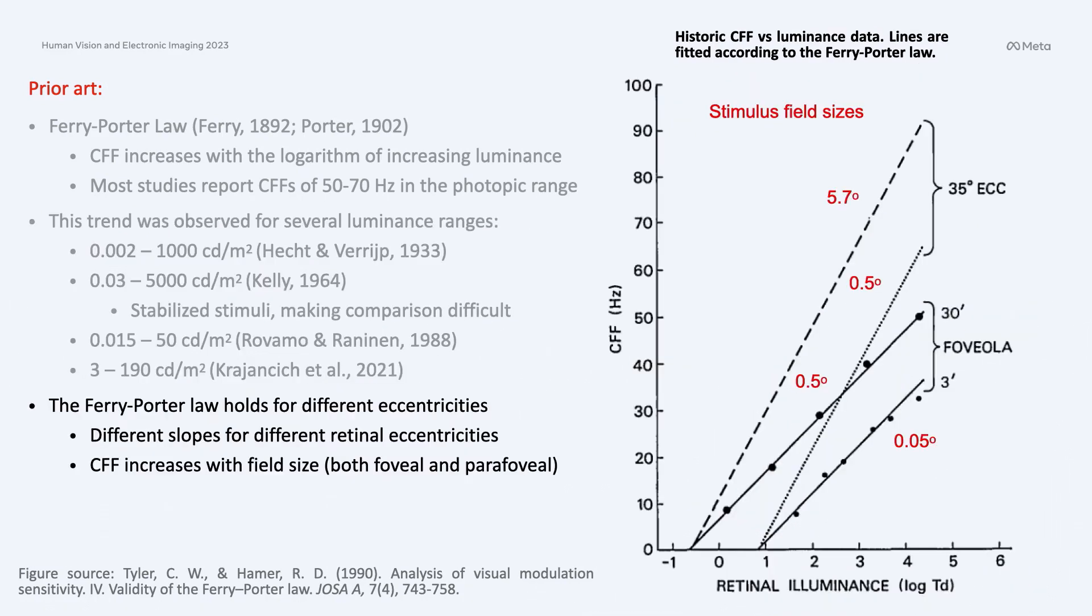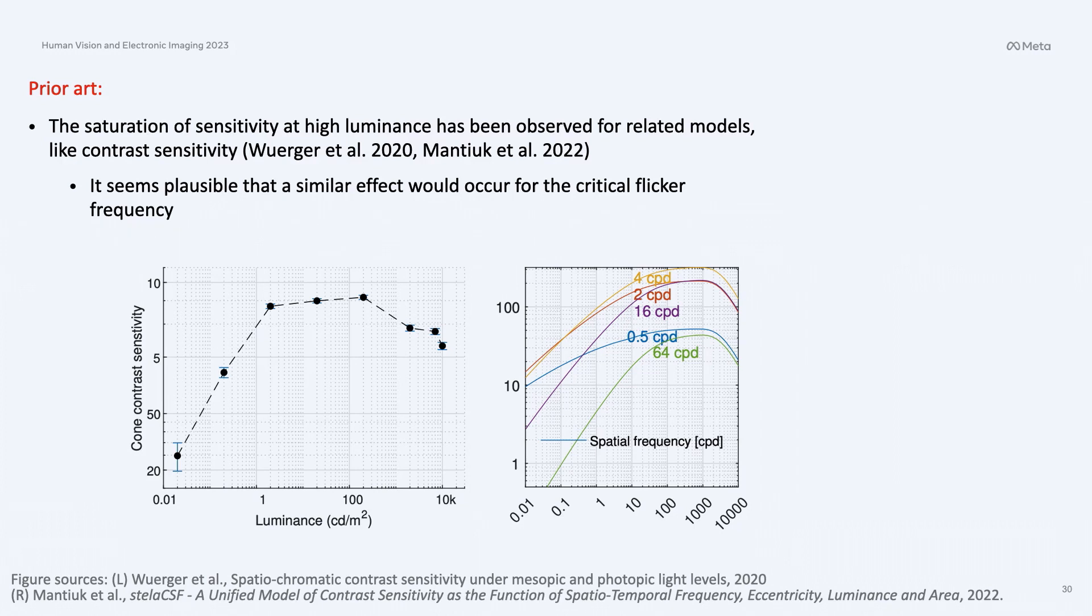The Ferry-Porter law also holds for different eccentricities. If you repeat the study with the stimulus not being foveated, you would still get a line but at a different inclination. We have an idea that saturation at high luminance and maybe even a reversal and reduction in sensitivity could happen. For example, we had an indication from recent work by Verger et al. in 2020, where they measured a contrast sensitivity function for just spatial stimuli with no temporal component. The sensitivity seems to rise and then eventually decline after around 1,000 nits. There's a precedent for something similar to happen. This has been modeled in our recent work with Rafal and Malija on Stella-CSF, which is a contrast sensitivity model. But for temporal aspects, it's not as clear as for spatial.